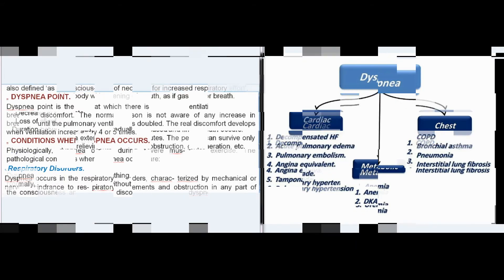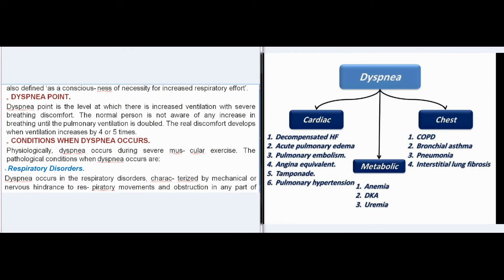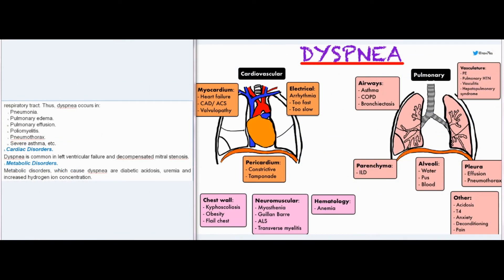Dyspnea is also defined as a consciousness of necessity for increased respiratory effort. Dyspnea point is the level at which there is increased ventilation with severe breathing discomfort. A normal person is not aware of any increase in breathing until pulmonary ventilation is doubled; real discomfort develops when ventilation increases by four or five times. Physiologically, dyspnea occurs during severe muscular exercise. Pathological conditions include respiratory disorders characterized by mechanical or nervous hindrance to respiratory movements and obstruction in any part of the respiratory tract.